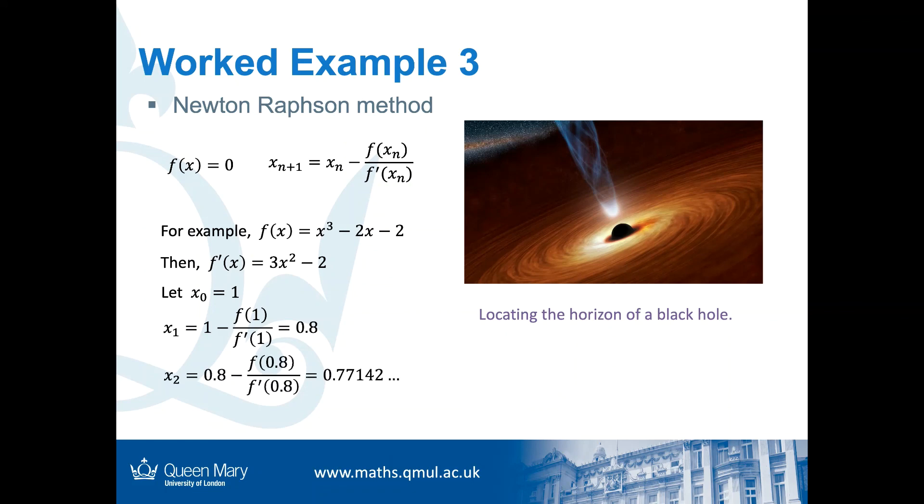And then, we put x₁ = 0.8 back into the formula, and we can get x₂ = 0.77142. And then, we put x₂ back into the formula to get x₃. As we can see, by following the process and repeating, we can calculate the more and more accurate solution to the equation.